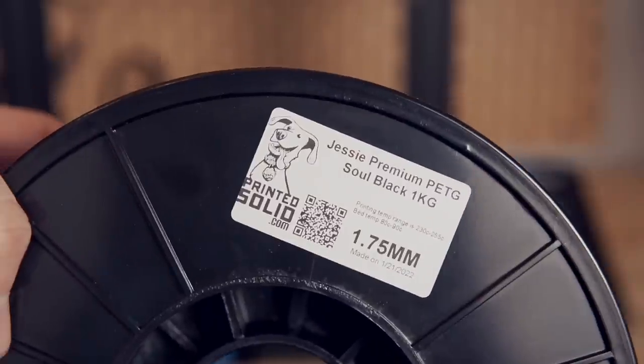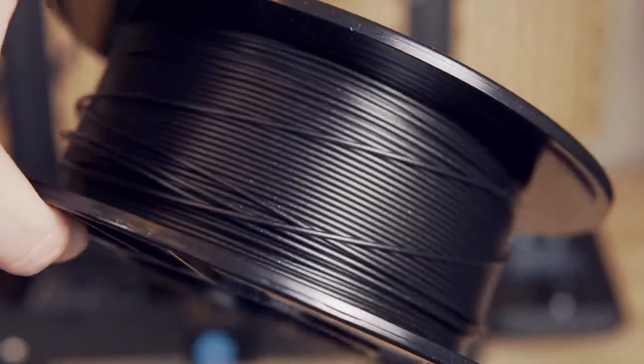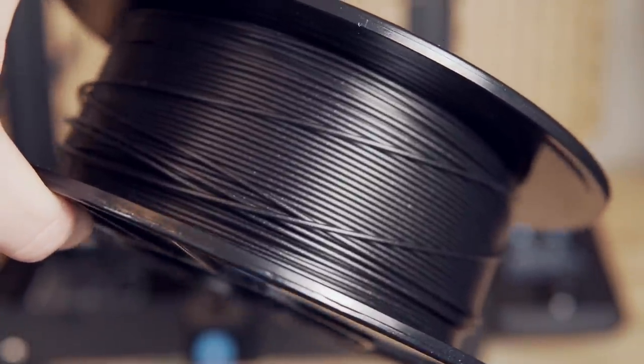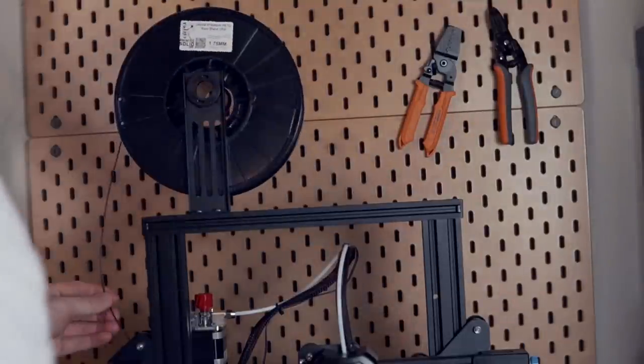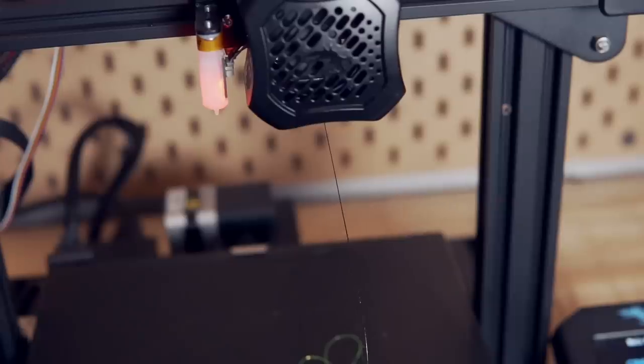As far as material goes, you'll want to use either PETG or ABS. PLA just has way too low of a melting temperature and it will not last very long being so close to the nozzle.